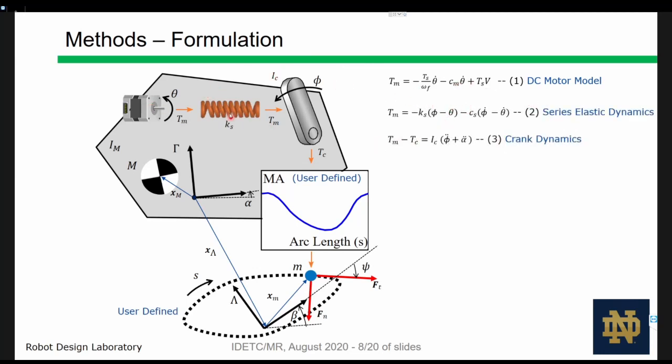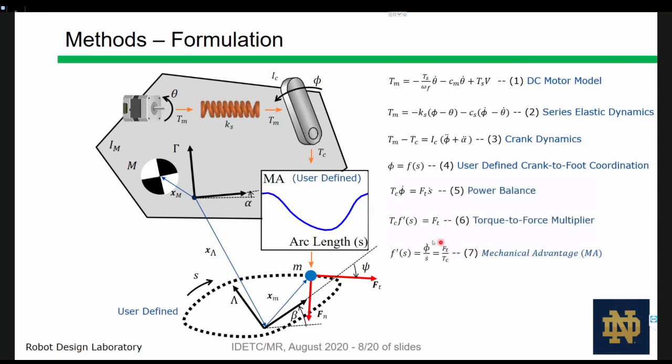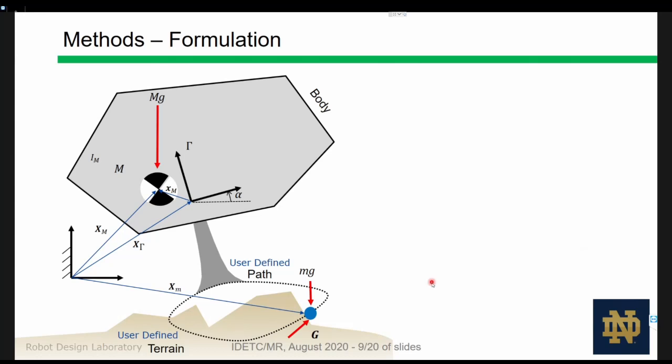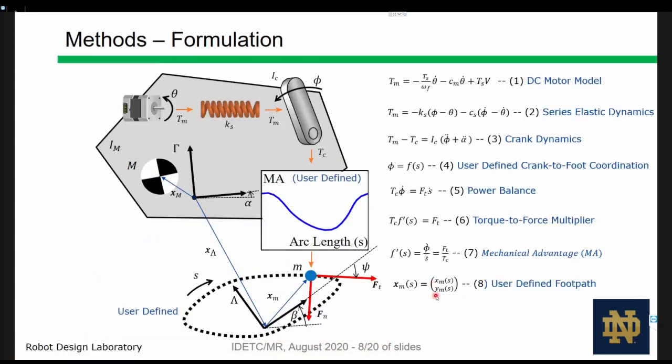The motor is attached in a series elastic configuration to an input crank. This crank powers the foot of the robot by applying a power balance to a user-defined function of crank angle to the foot position. The relationship between the crank angle and our components also defines mechanical advantage. A body frame and foot path frame is defined and the foot position in the path frame is also user-defined as a function of position of the foot along its one degree of freedom path as this tangency angle of the foot in its own frame is psi.